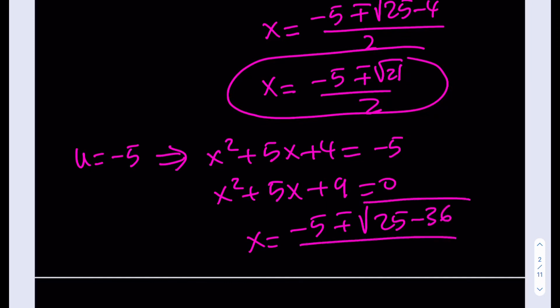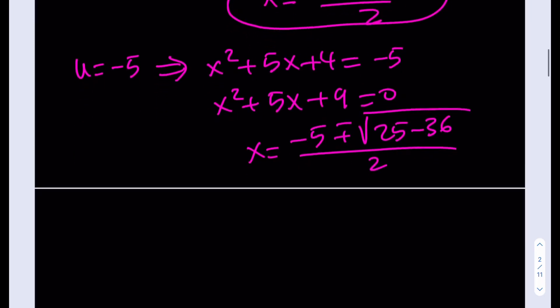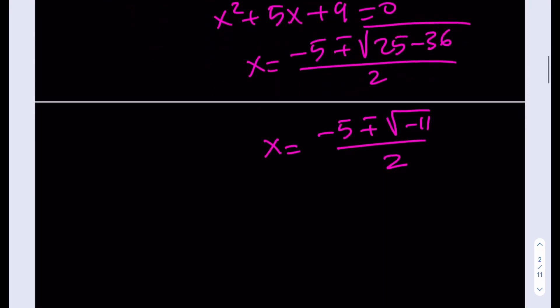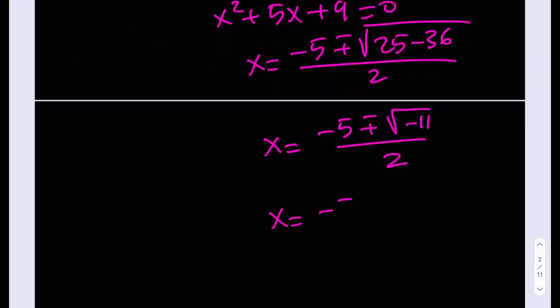Uh-oh, we're getting a problem here. And what is that problem? Well, we're getting a negative number inside the radical, which means that we're not going to have real roots. But that's okay. This is just going to be complex roots. And they're going to be (-5 ± √11i) / 2. So those are going to be the other two solutions.